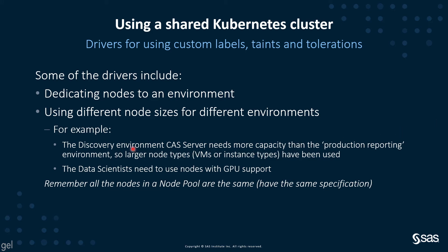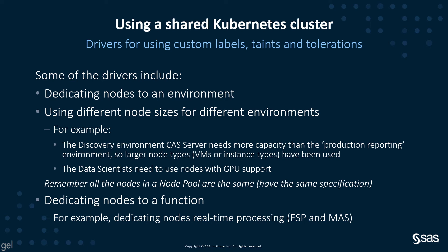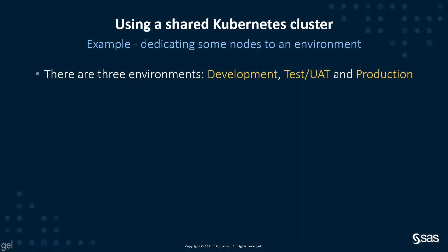Another driver is using different node sizes for different environments. For example, perhaps in the discovery environment the CAS server needs more capacity than in the production reporting environment, so larger instance types or VMs will be used. Or perhaps the data scientists need instances with GPU support. Remember, all the nodes in a node pool have to be the same, so when you need a different instance type, you would need to set up a new node pool. Finally, another driver is dedicating nodes to a function — for example, dedicating nodes to real-time processing with event stream processing or the microanalytic score service, to protect that processing versus general interactive processing.